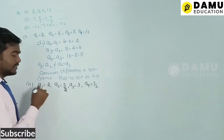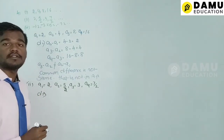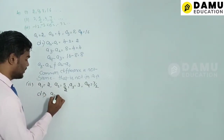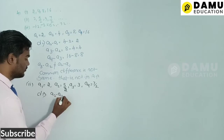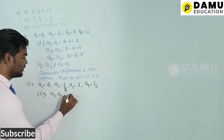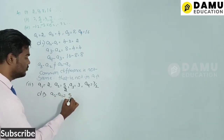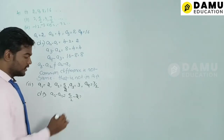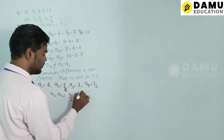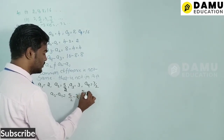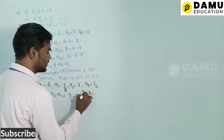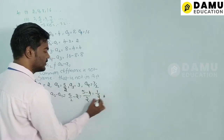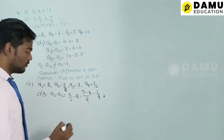The common difference d = a2 − a1 = 5/2 − 2. Taking LCM: (5 − 4)/2 = 1/2. So the first common difference is 1/2.